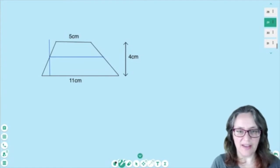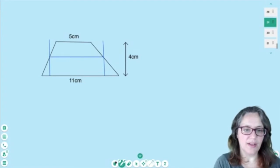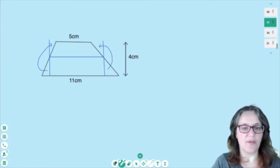Because these bits here at the bottom that stick out, if we chopped those off and moved them up to here, they would be a perfect fit and we would have our rectangle.